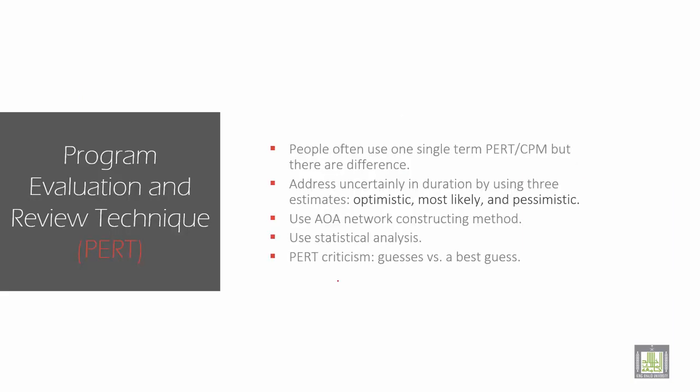Then PERT. What is PERT? PERT is Program Evaluation and Review Technique. People often use the single term PERT and CPM, but there are some differences in this method. We have three estimates: Optimistic, Most Likely, and Pessimistic. I have shown you in the previous slide. Optimistic is the fast time, Pessimistic is the slow time, and Most Likely is the normal time.